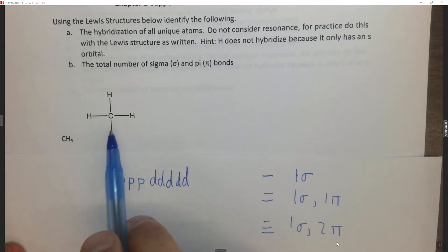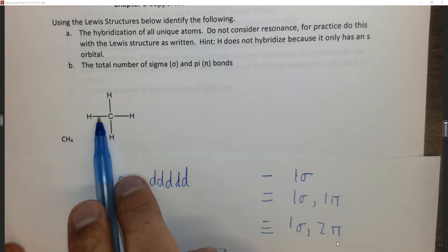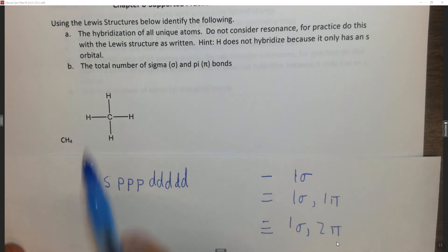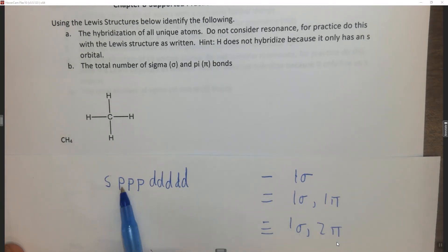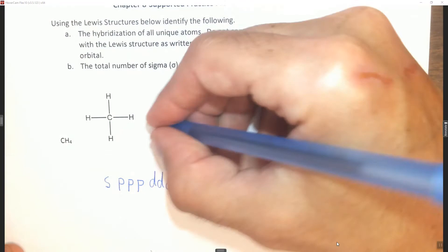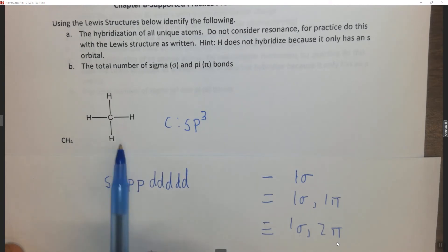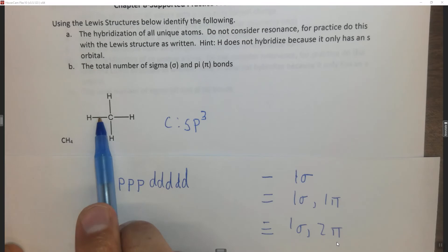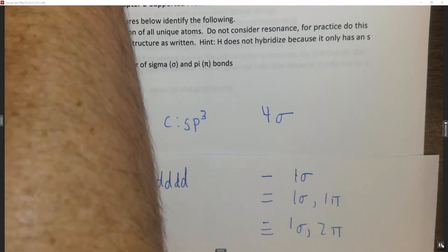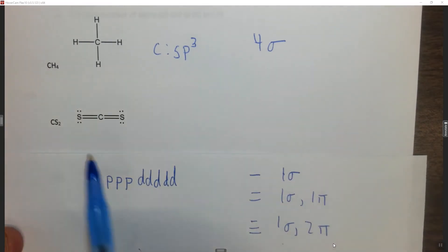So after all that, now we can actually do one. We have methane here, CH4. First thing I want to do is count domains with respect to carbon. Note that I do not need to find the hybridization of hydrogen because it only has an S orbital. Carbon has one, two, three, four domains, which means we need four hybrid orbitals — SP3. For the sigma and pi bonds in CH4, we have one, two, three, four bonds and they're all sigma bonds. So we have four sigma bonds.